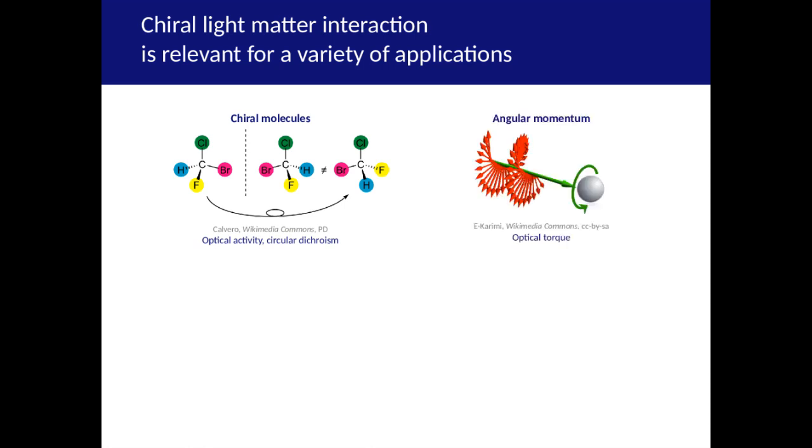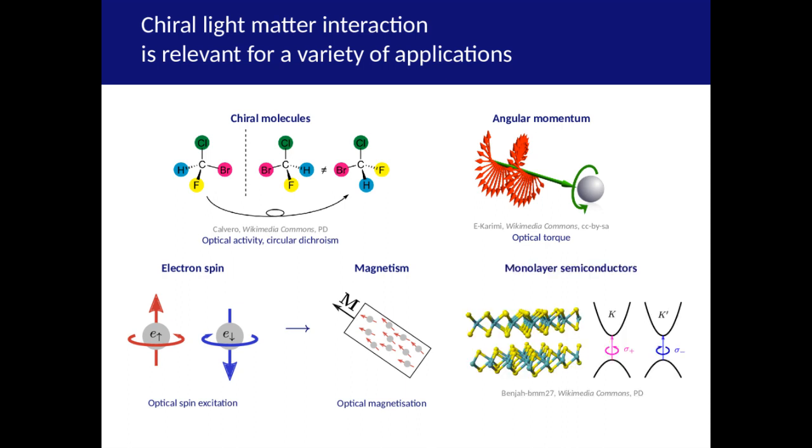Light also contains angular momentum which it can impart to particles as an optical torque. It is also possible to excite up or down spins in materials selectively, giving rise to optical magnetism. Finally, atomically thin semiconductors such as transition metal dichalcogenides can absorb left and right polarized excitons to separate valleys of their band structure and produce circularly polarized photoluminescence.